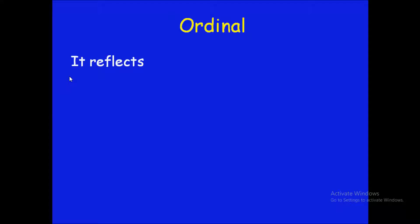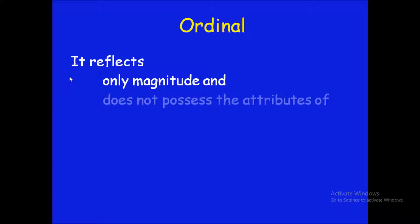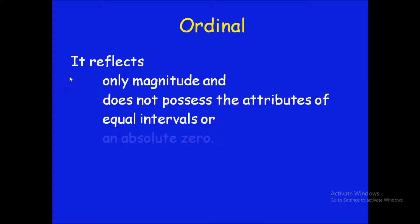Now we will see about ordinal scale, the next level of measurement. Ordinal scale reflects only magnitude and does not possess the attributes of equal intervals or an absolute zero. Comparing with the previous one, nominal scale does not have even magnitude, but in ordinal scale the magnitude is there, though equal intervals and absolute zero are not present. Let's see with an example.